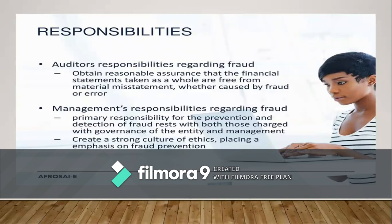The auditor has responsibility to plan and perform the audit to obtain reasonable assurance about whether the financial statements are free from material misstatement, whether caused by error or fraud. Because of the nature of audit evidence and the characteristics of fraud, the auditor is able to obtain reasonable but not absolute assurance that material misstatements are detected. The auditor has no responsibility to plan or perform the audit to obtain assurance about misstatements — whether caused by errors or fraud — that are not material to the financial statements.